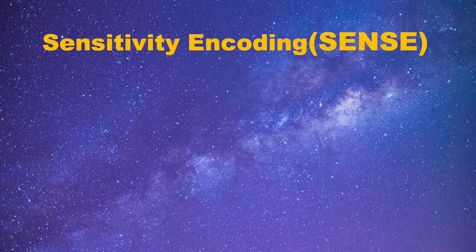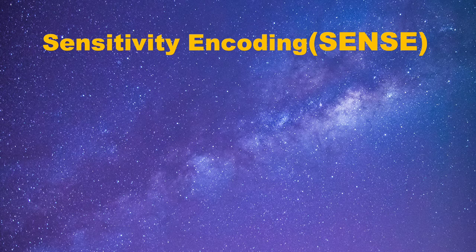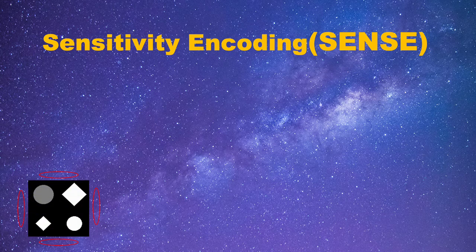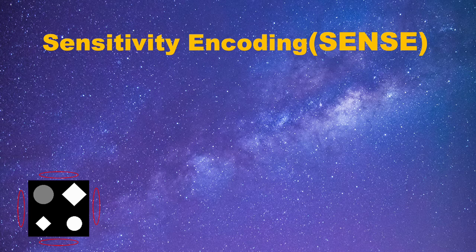SENSE, its full name is sensitivity encoding. As its name implies, it uses information of sensitivity of the coils to reconstruct the image. Remember, since we have placed the coils in different locations, the image they acquire will be different.